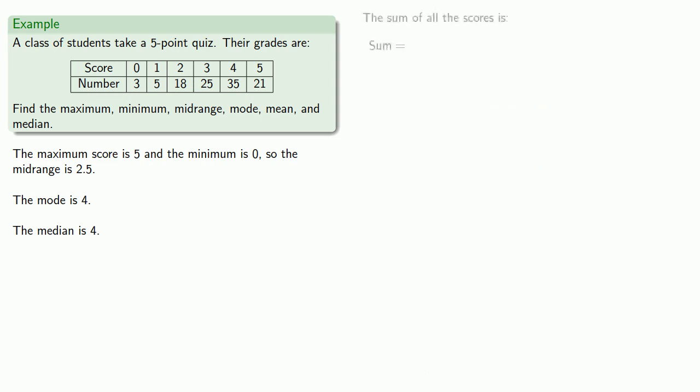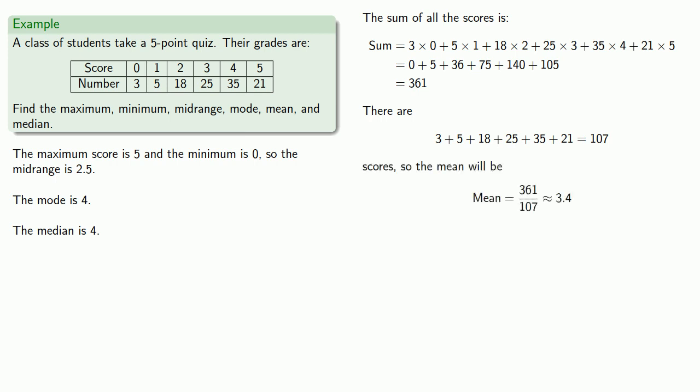So, I can find the sum of all scores. That'll be three zeros, five ones, eighteen twos, twenty-five threes, thirty-five fours, and twenty-one fives. Which gives me a total of three hundred and sixty-one points. And there are 3 + 5 + 18 + 25 + 35 + 21, that's a hundred and seven scores. So the mean will be the total, 361, over the number, 107, which will be about 3.4.